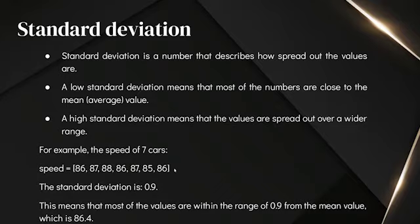As an example, here we have a list with the speeds of seven cars: 86, 87, and so on. If you find the standard deviation, it is 0.9. This means that most of the values are within 0.9 from the mean value. If you find the mean using the method I taught you in my previous lecture, you will see that it comes out to 86.4.